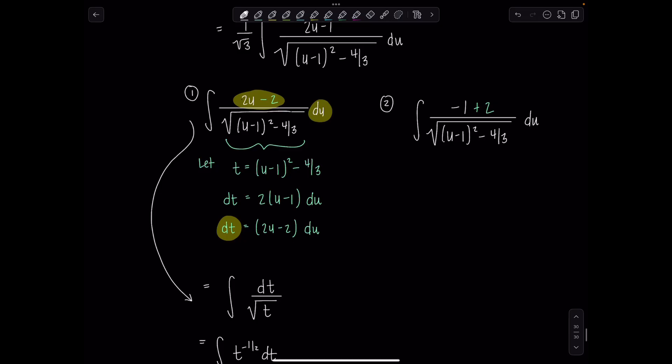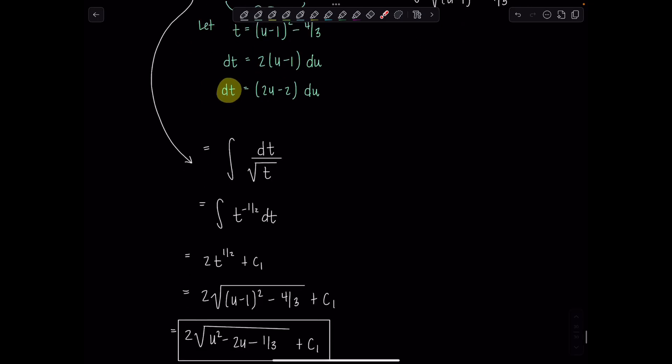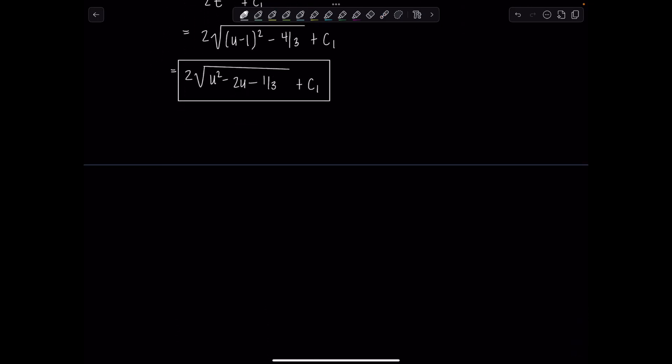Now, integral number two, really it's positive one over all this stuff. So integral number two is positive one, and I haven't forgotten there's a one over rad three sitting outside. Square root u minus 1 squared minus 4 thirds du. Now, when you have the variable quantity squared minus the constant, that's when you use secant theta for your trig sub.